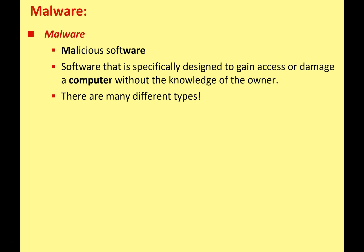So let's take a look at the first topic, which is going to be malware. Malware stands for malicious software — it's software that is designed specifically to gain access or damage a computer without the knowledge of the owner. There are many different types of malware, and I'm going to run through some of the most common types and give you a short definition of each.